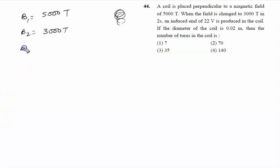In two seconds, the time change dt is given to us as two seconds, and EMF induced is 22 volts produced in the coil. If the diameter of the coil is 0.02 meters, so the radius is half of the diameter, that is 0.01 meters. Then the number of turns in the coil we have to calculate.